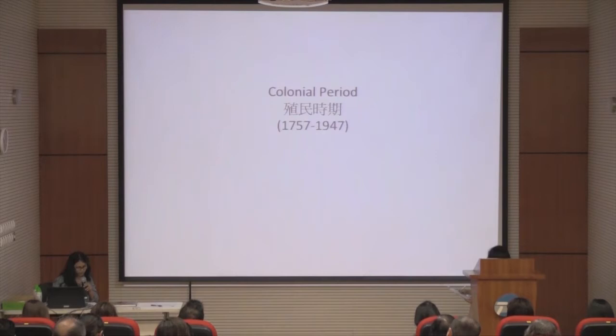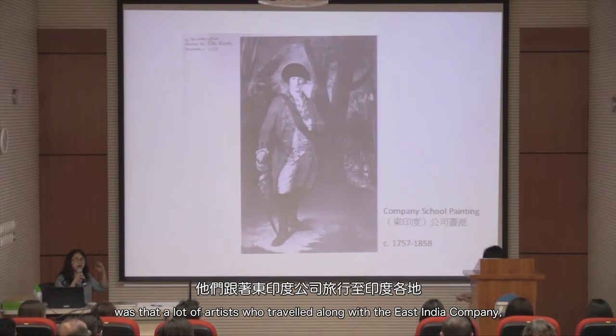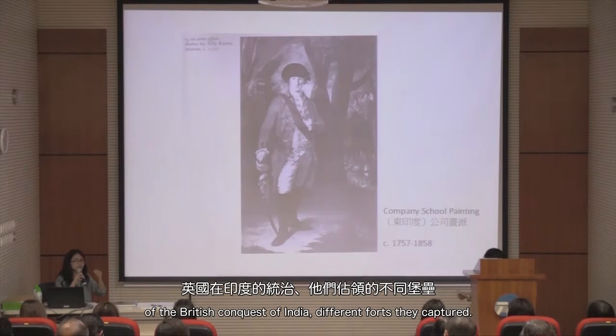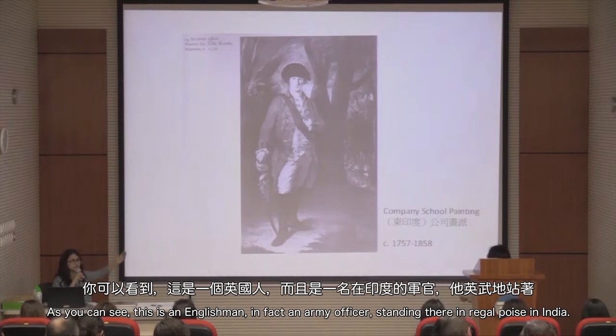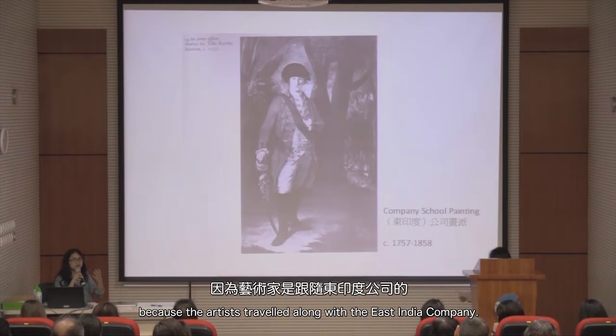One of the things that happened alongside the East India Company was that you had a lot of artists who traveled with the Company to different parts of India and made paintings and artworks documenting the landscapes of India, the British conquest, the different forts they captured. You can see here an army officer standing in all regal poise in India. This school of painting was known as the Company School because the artists traveled along with the East India Company.